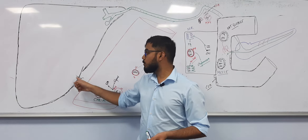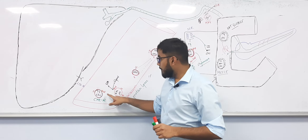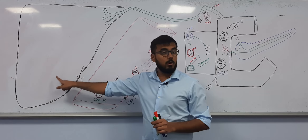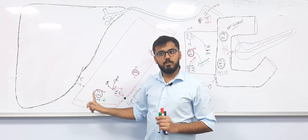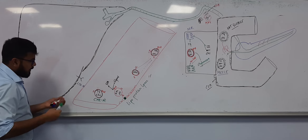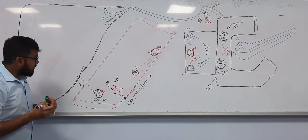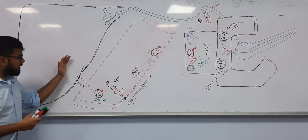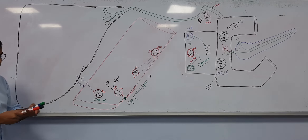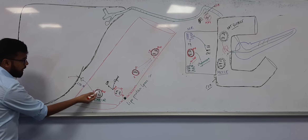Because the chylomicron remnant has ApoE, it binds to the LDL receptor on the liver surface. The LDL receptor is activated and the hepatocyte sucks in all the contents: protein, triglycerides, and cholesterol. Inside the liver, proteases break down the protein into amino acids — so ApoB48, ApoC2, and ApoE are all lost.